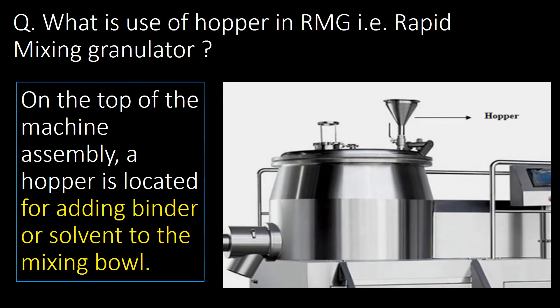What is the use of the hopper in RMG? On the top of the machine assembly, a hopper is located for adding binder or solvent to the mixing bowl.